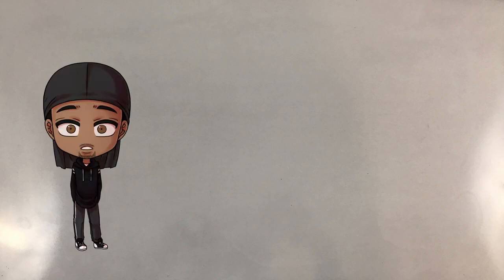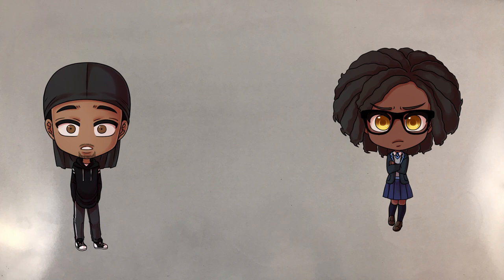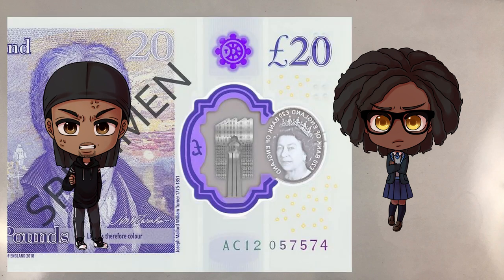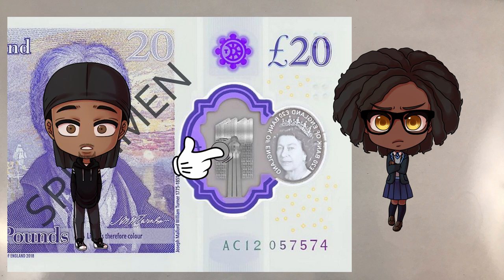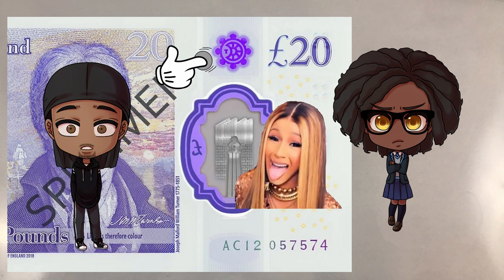There's millimeter waves in 5G — why would the government allow that? It's population control. Look at the new 20-pound note, the 5G towers, and look above it — what do you see? Oh my god, uncle.